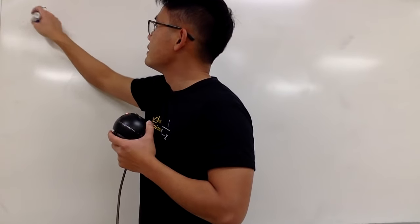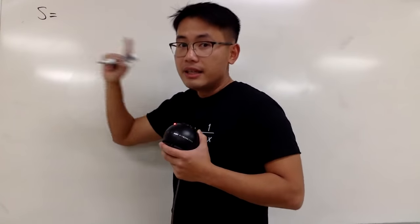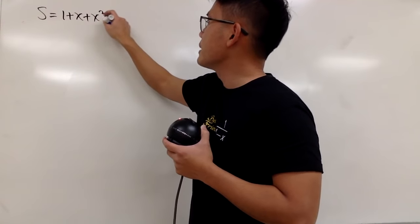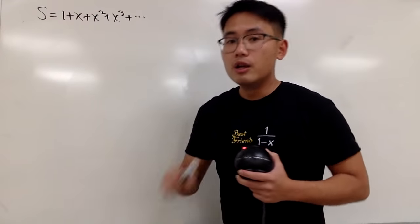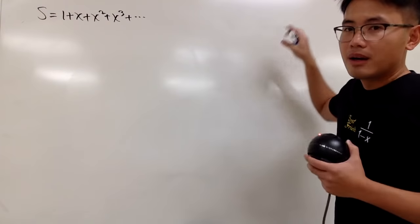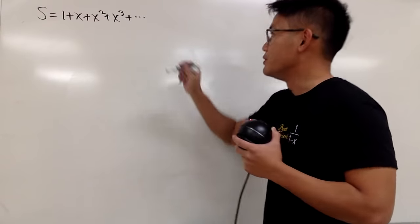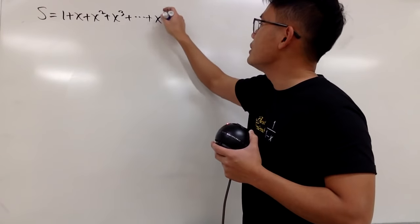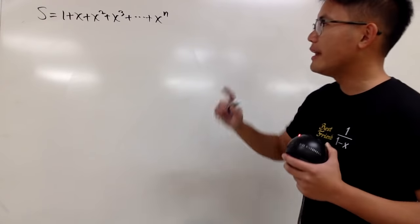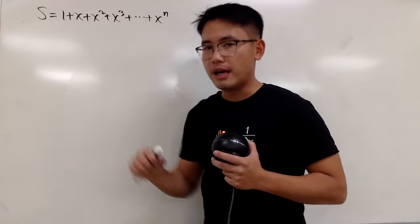We will have S, right, we'll just call the sum to be S. This right here is equal to 1 plus x plus x squared plus x to the third power plus dot dot dot. Remember, for the best friend, we will have to just go on forever. But for the mom, we actually will be just adding up to x to the nth power. So this is the mom's version, and our goal is to figure out a formula for S.